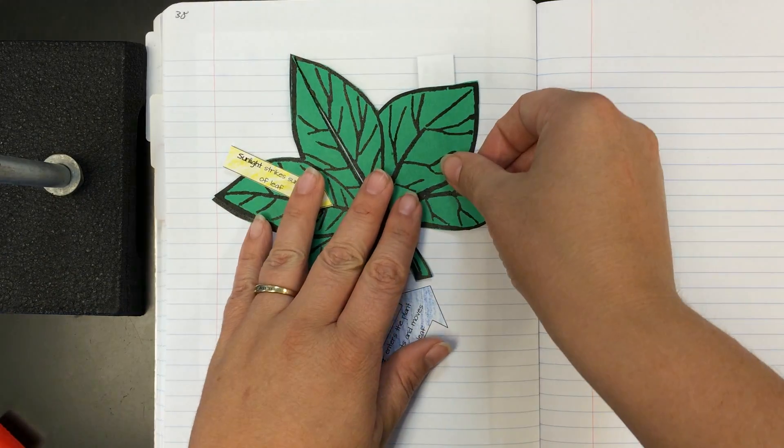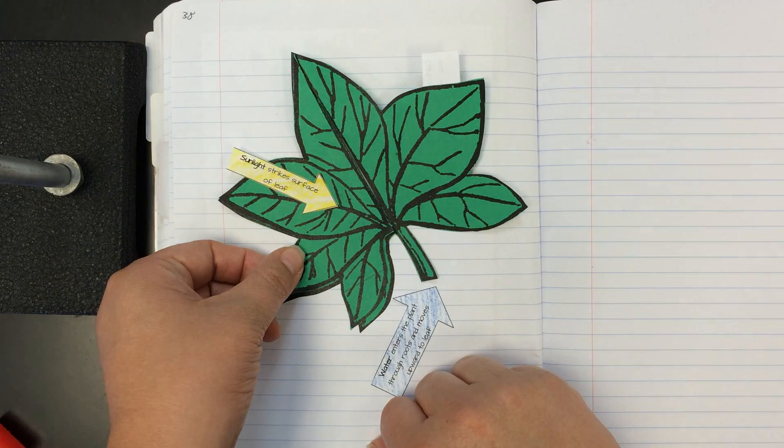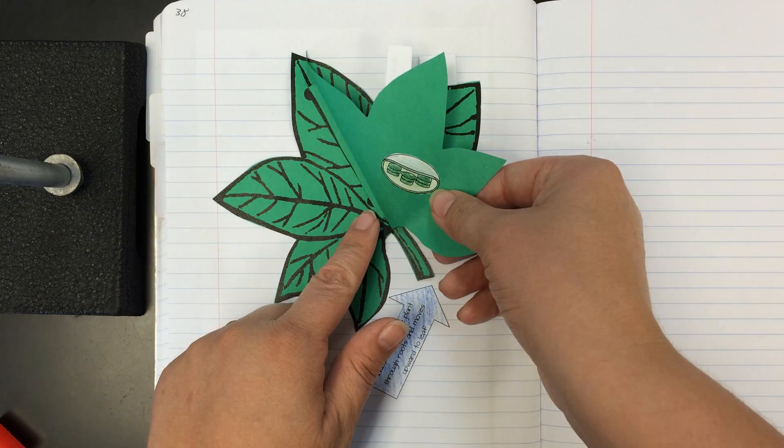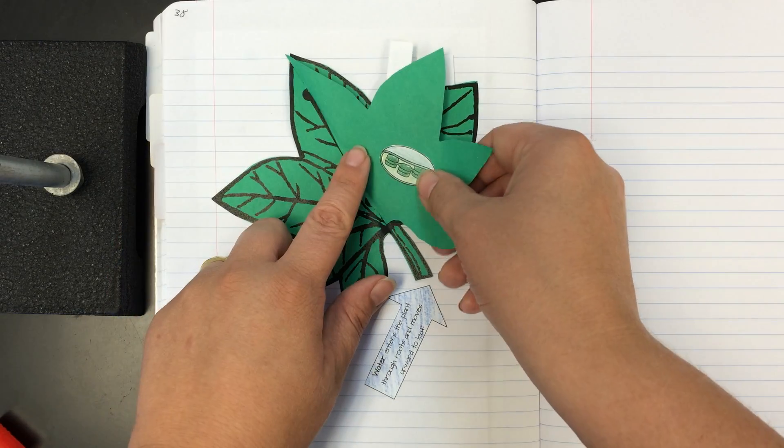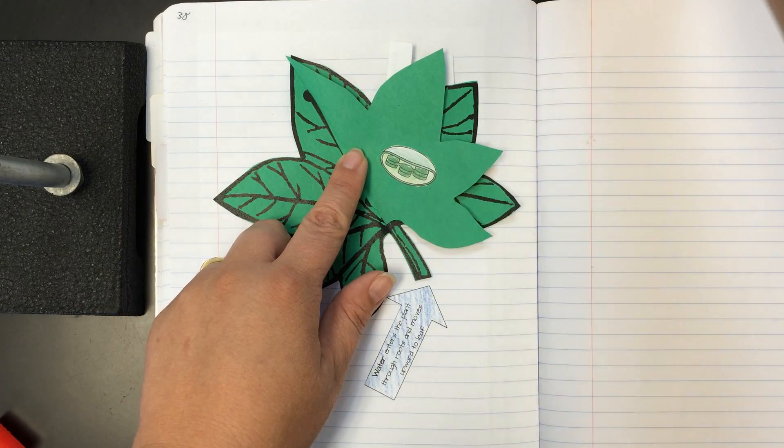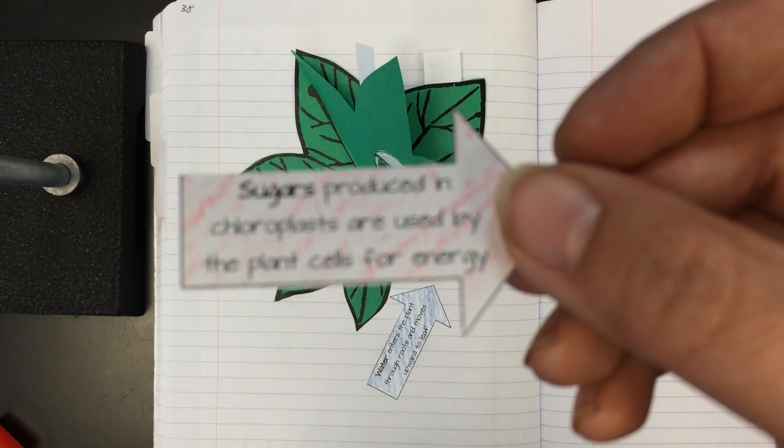So what's happening during this whole process? We've left out a key organelle, and that is our little chloroplast that we just glued in a moment ago. So what's happening in the chloroplast? Well, the chloroplast is producing sugars. So let's look at this arrow.